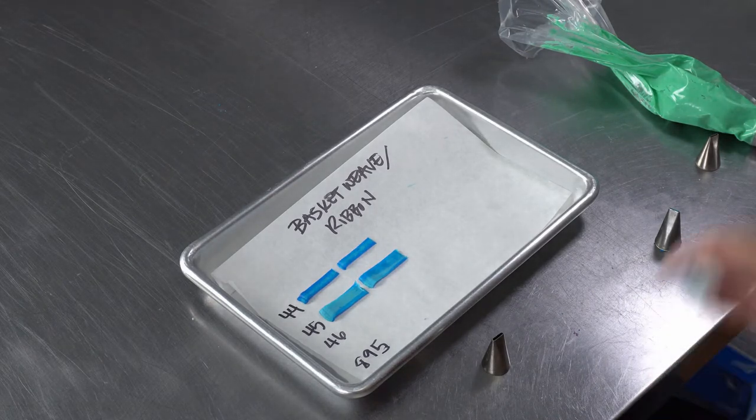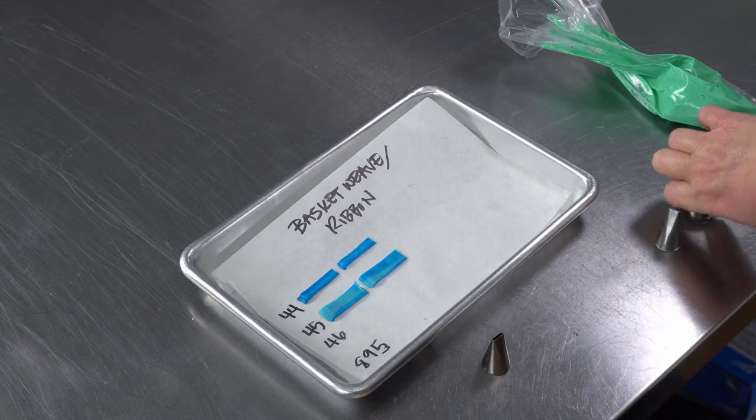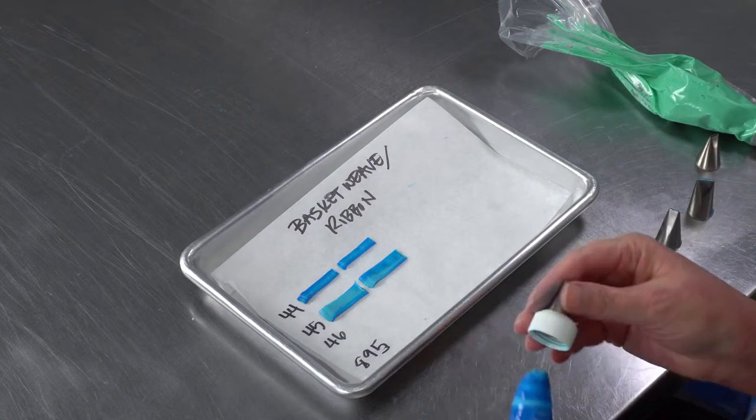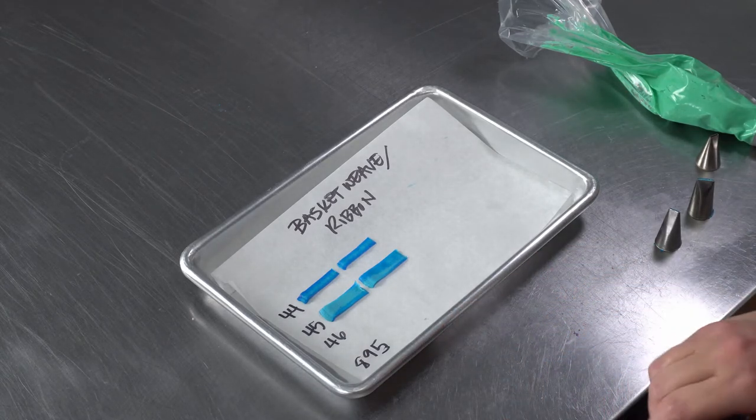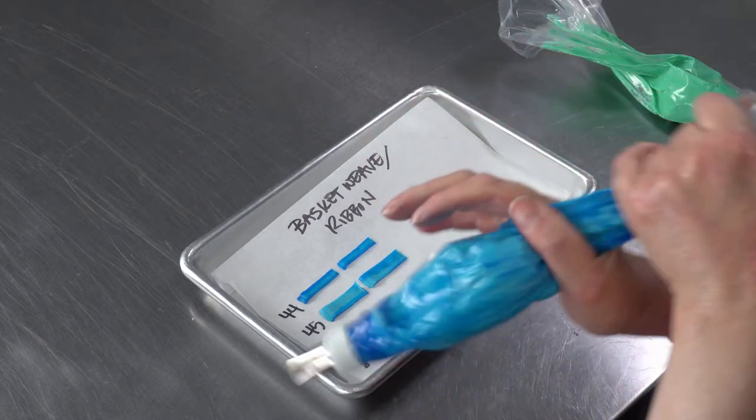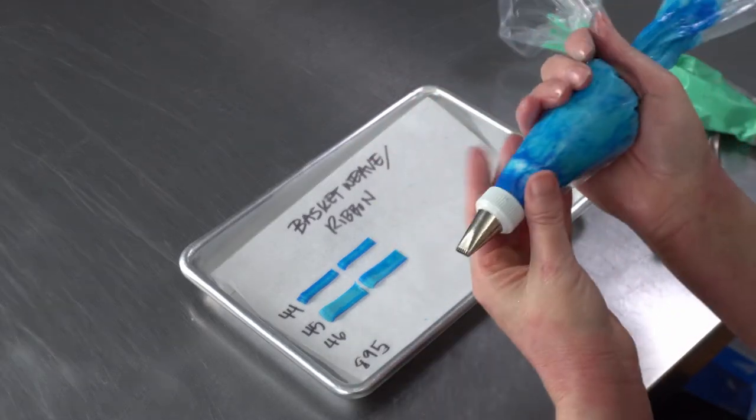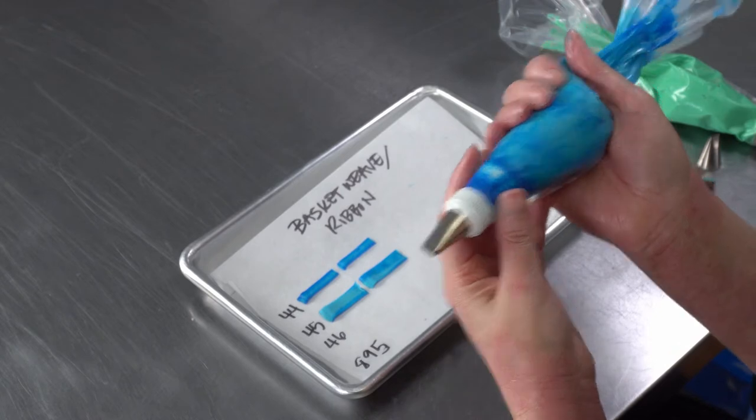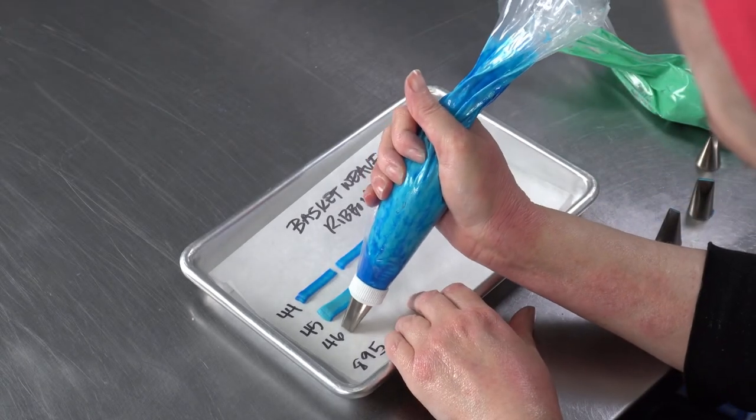The 46 is flat on one side and has a little comb or ridges on the other. You have to be careful which side is facing up and which side is against the surface that you're decorating, so that you get the right side and the right effect on your cake.